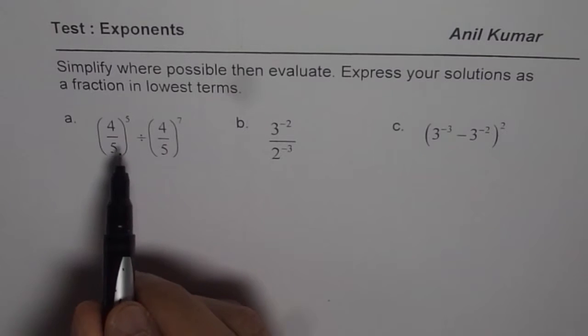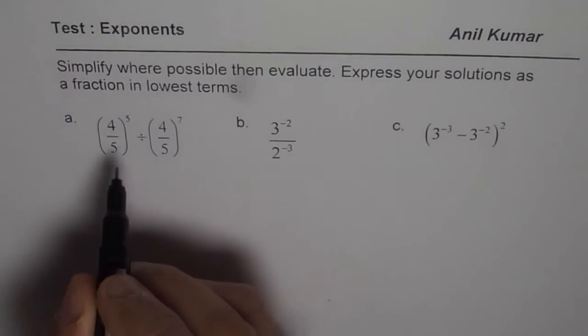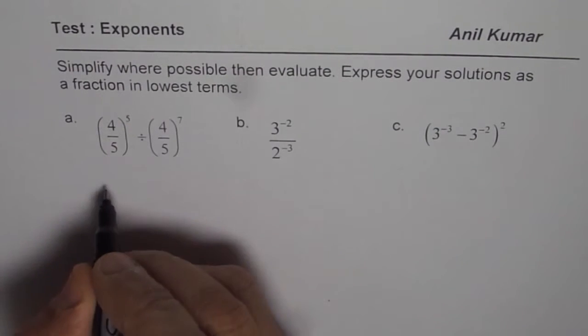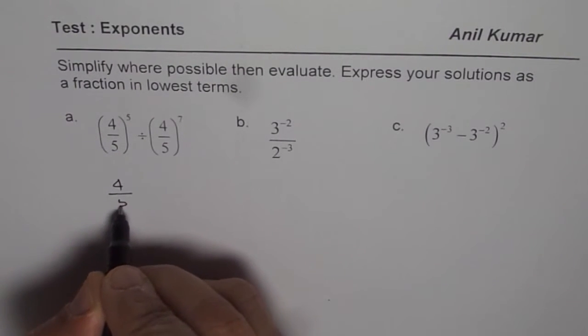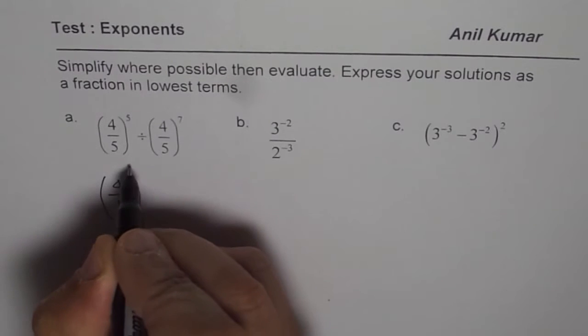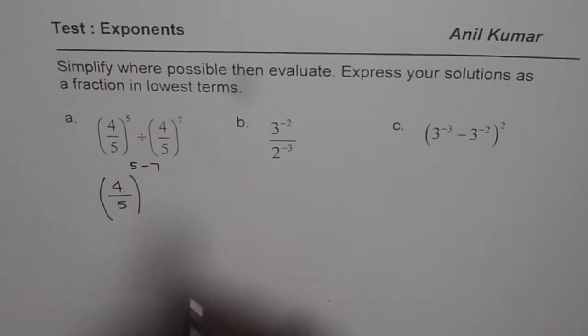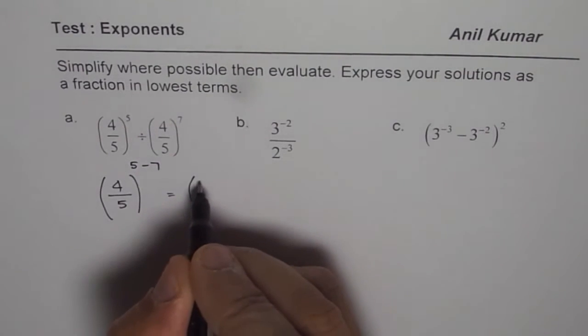In the first case, (4/5) is the common base. We are dividing, so we will subtract the powers. So we have (4/5) to the power of 5 minus 7. 5 minus 7 is equal to minus 2.